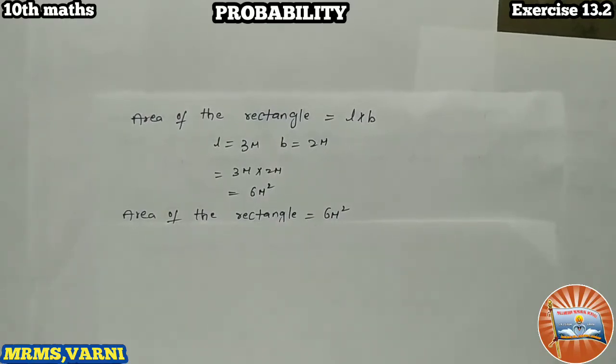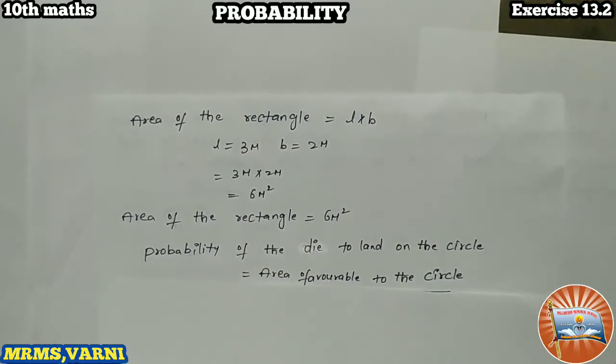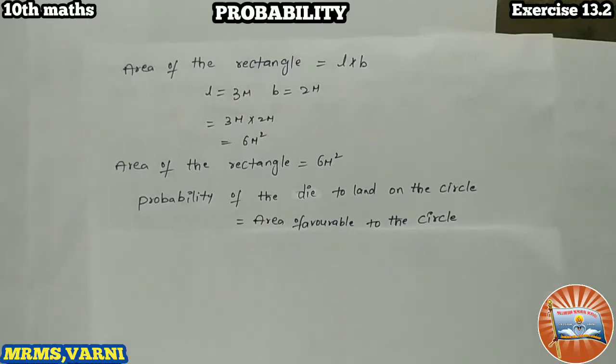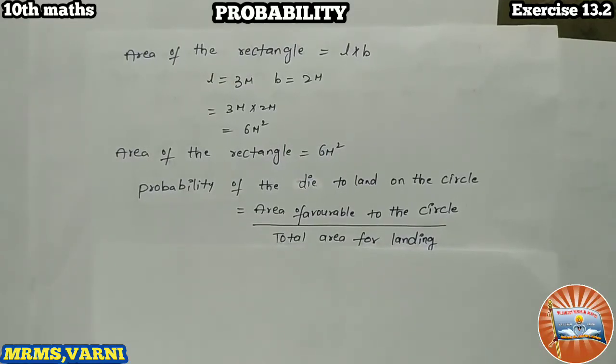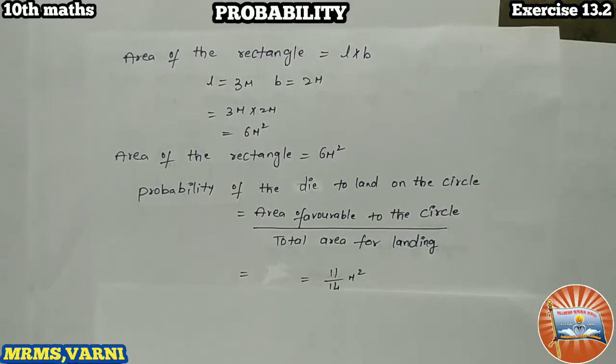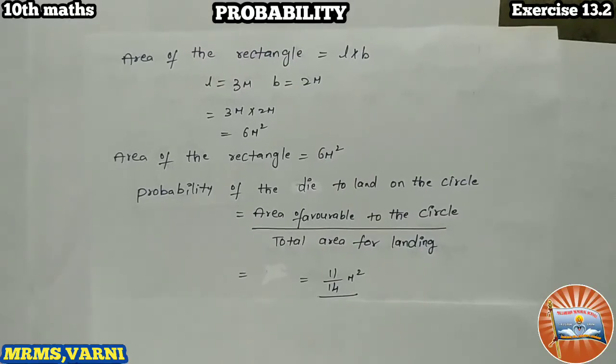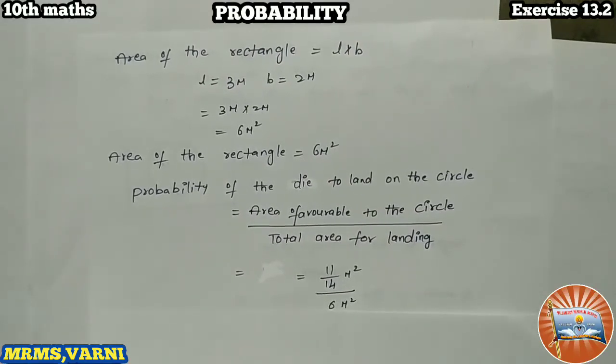Let us write the formula. Probability of the die to land on the circle equals area favorable to the circle divided by total area for landing. Area of the circle we have 11 by 14 meter squared. Total area, that is 6 meter squared we got.